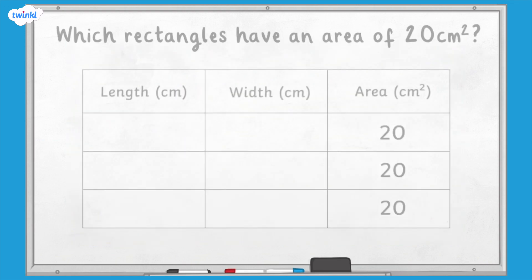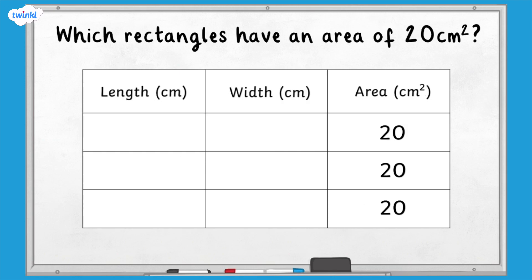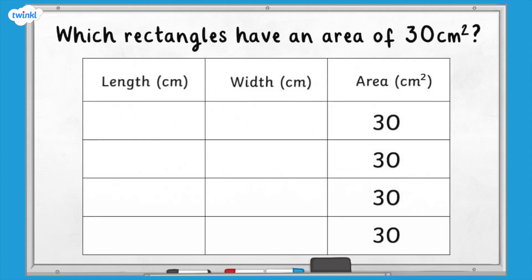We can use this relationship to find other sets of rectangles with the same area. For example, to find which size rectangles have an area of 20 centimetres squared, we can list the factor pairs of 20. This shows us all of the rectangles that have a length and width which are both whole numbers with an area of 20 centimetres squared. Can you use this method to find the measurements of all the rectangles that have an area of 30 centimetres squared? Pause here and have a go, and remember to use factor pairs to make sure you find all the possibilities.